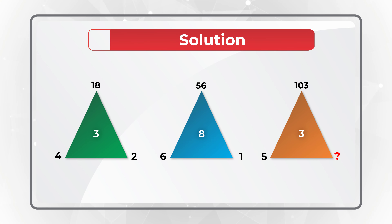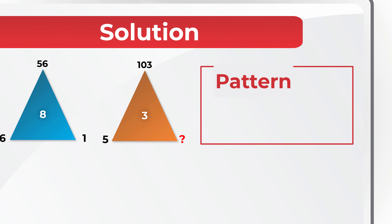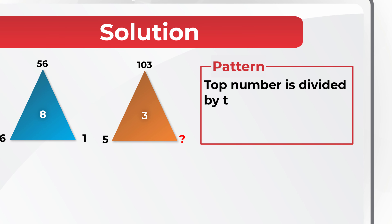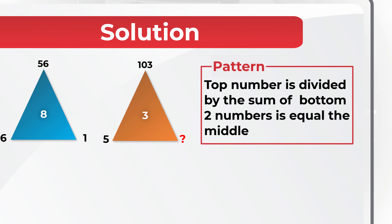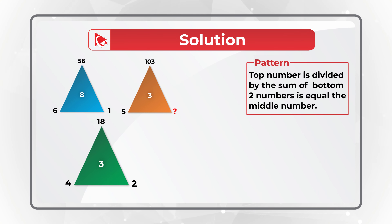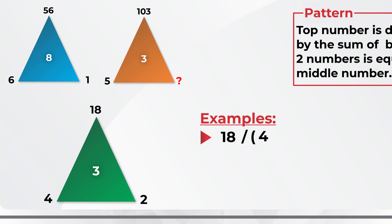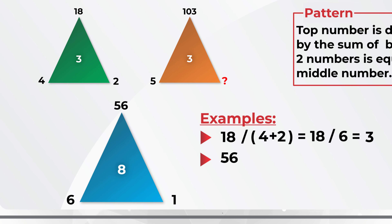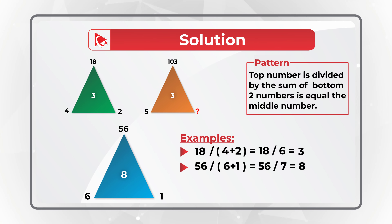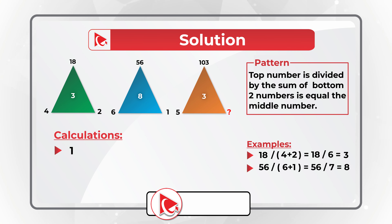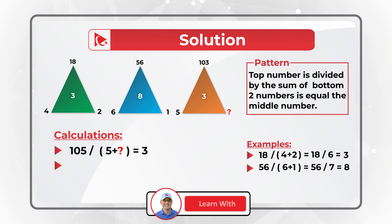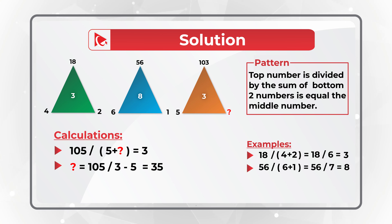Always look for patterns. The pattern here is that the top number divided by the sum of the bottom two outside numbers equals the middle number. For example: 18 ÷ (4 + 2) = 18 ÷ 6 = 3; and 56 ÷ (6 + 1) = 56 ÷ 7 = 8. To find the missing number: 105 ÷ (5 + x) = 3, so we divide 105 by 3 and subtract 5: 35 − 5 = 30. The answer is choice D, 30.